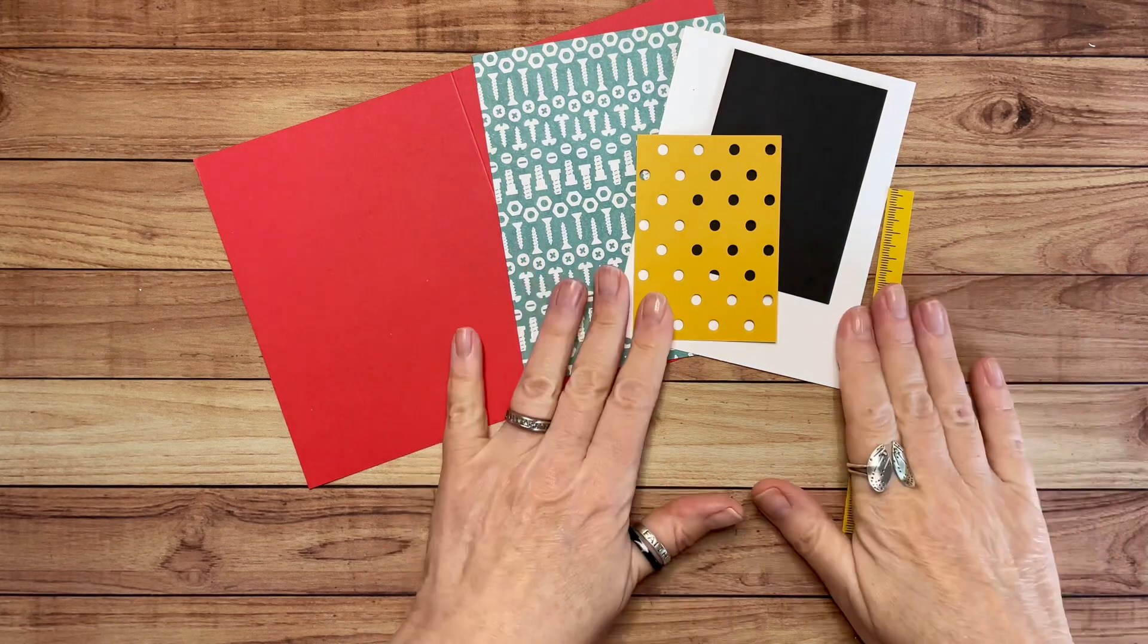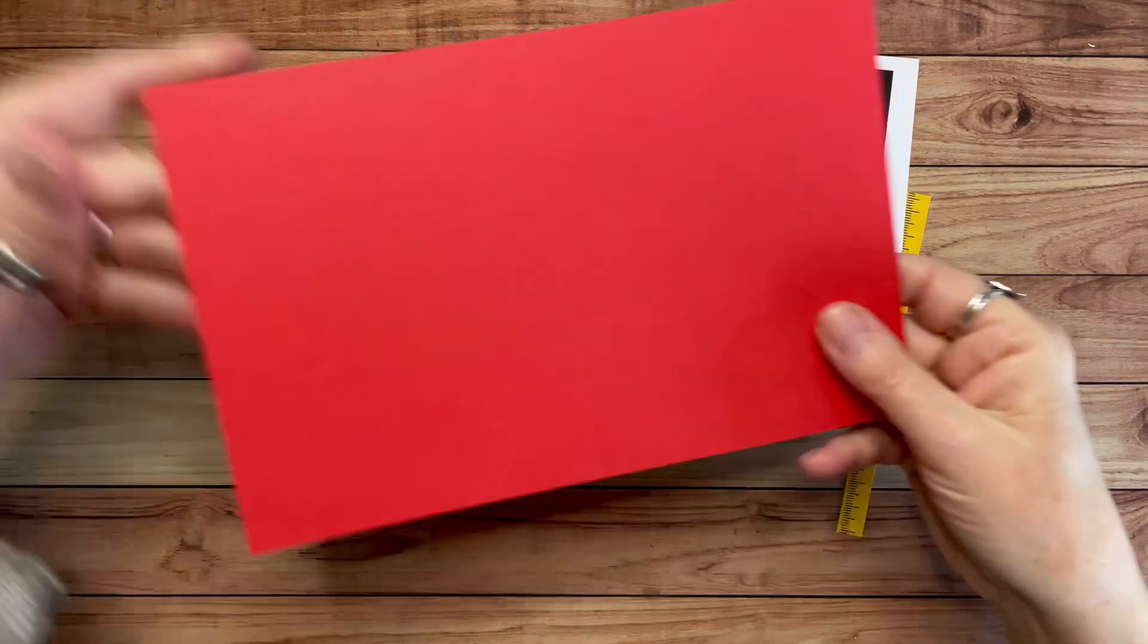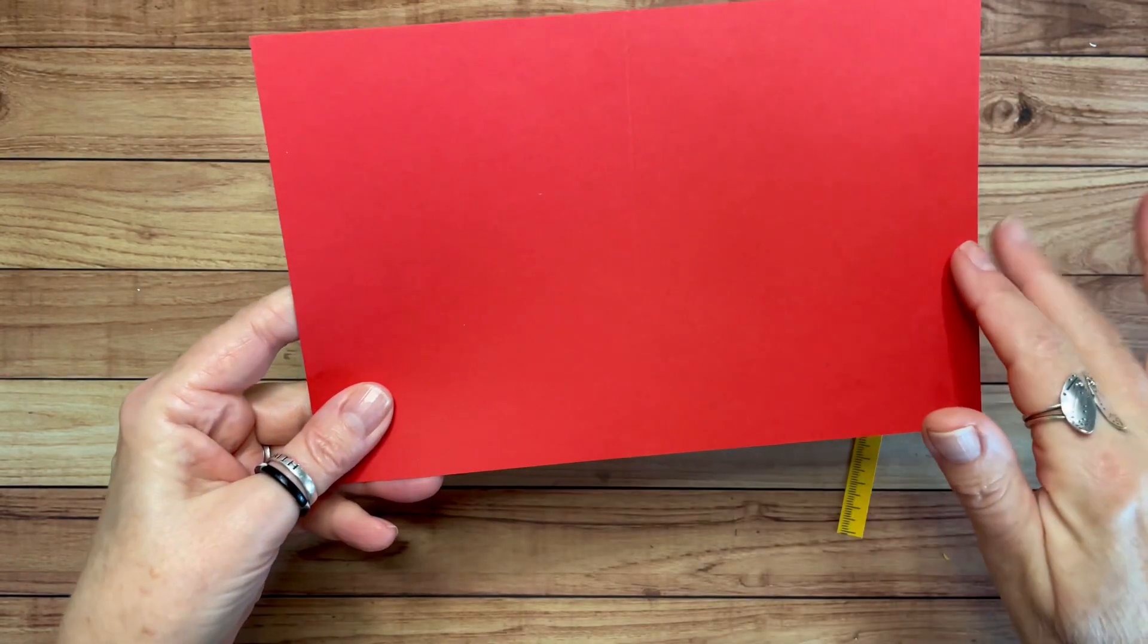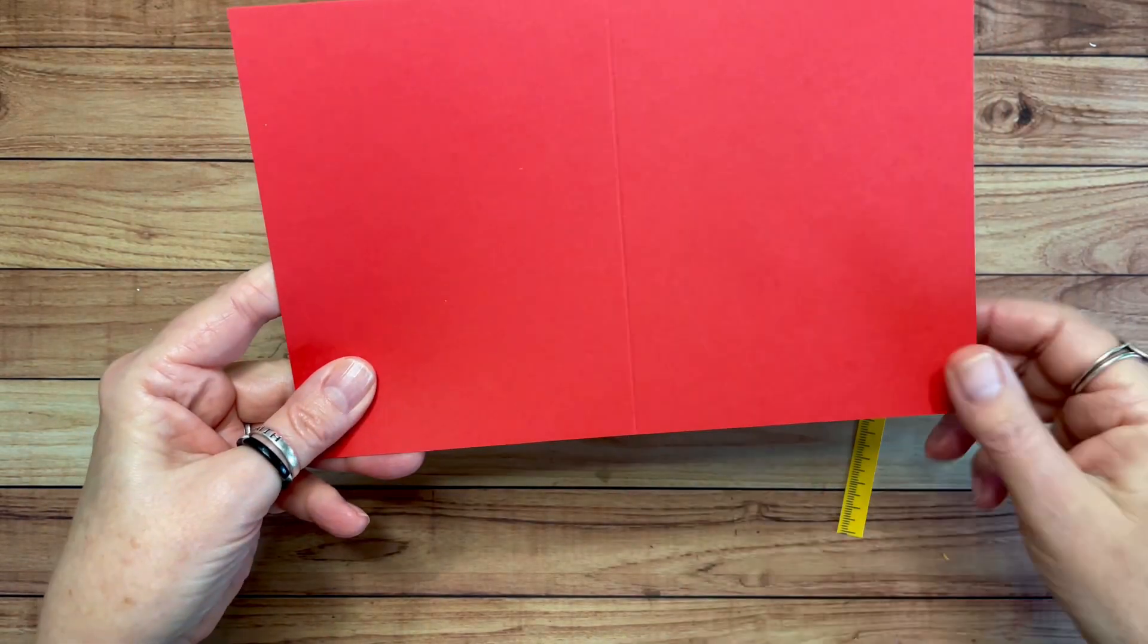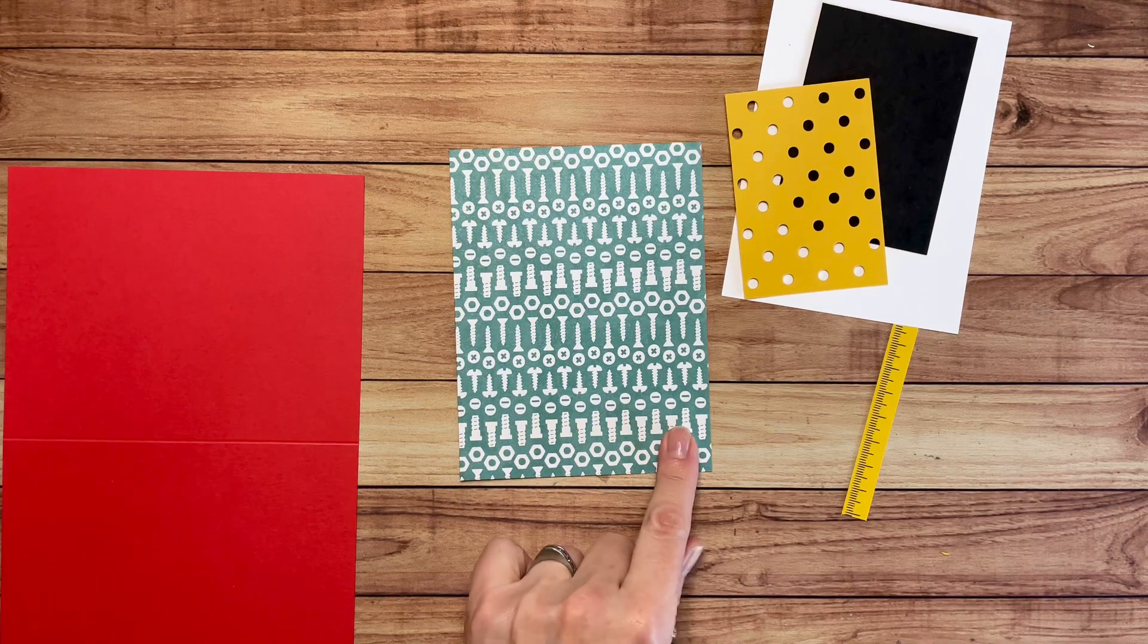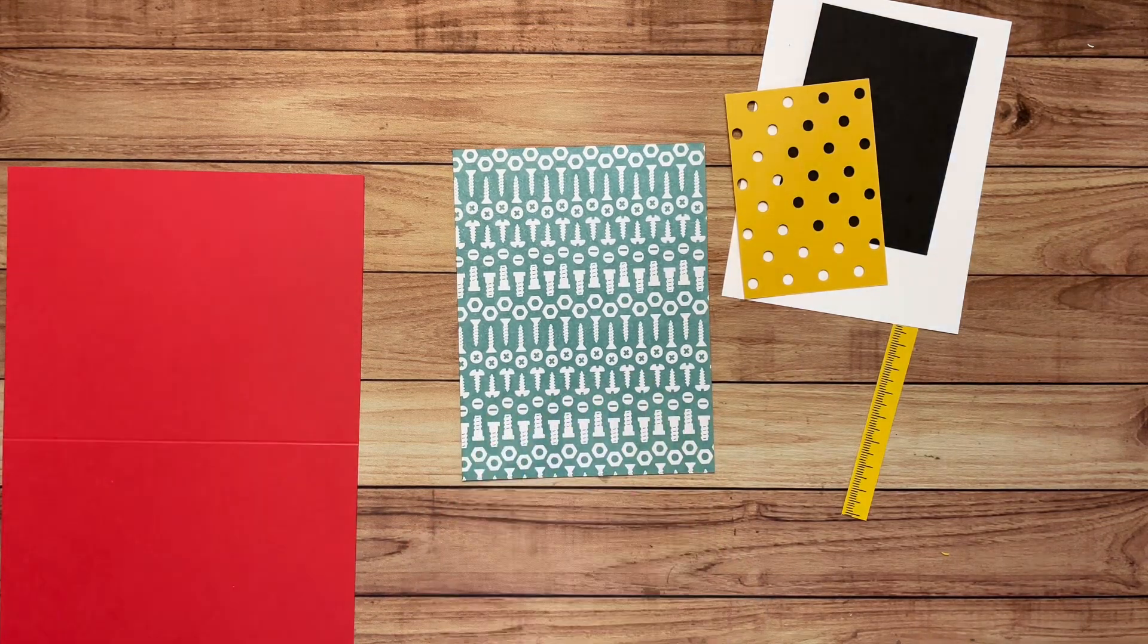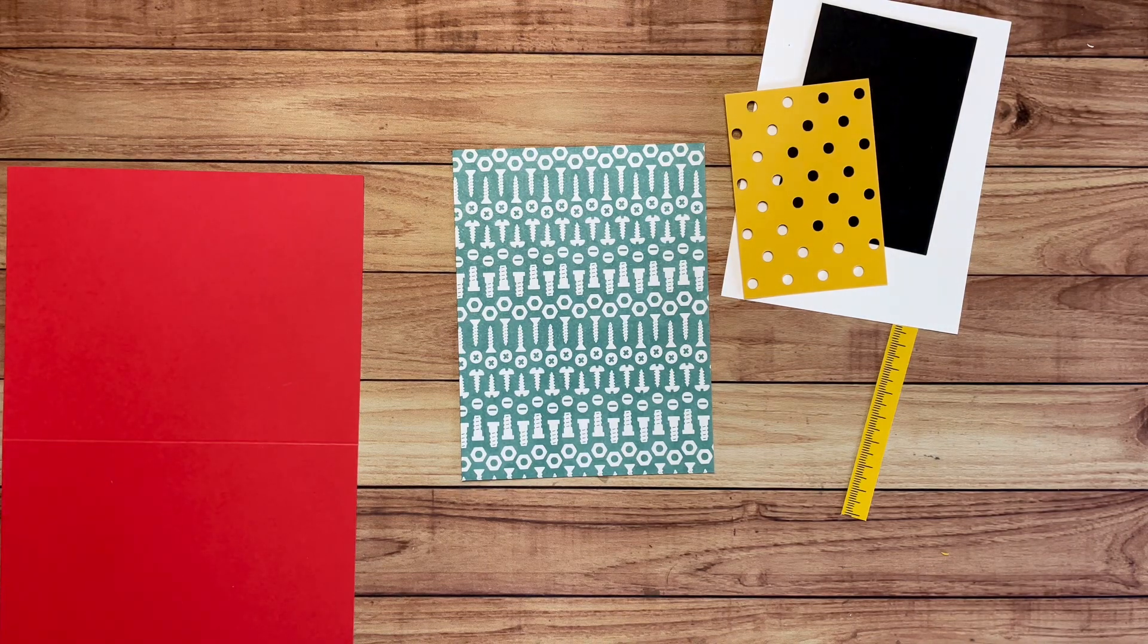All right, let's talk about what we've got here today. I have a piece of Poppy Parade cardstock. It is eight and a half inches by five and a half inches, scored in the middle at four and a quarter. Let me grab my ruler because I want to make sure I tell you the right measurements for these items.